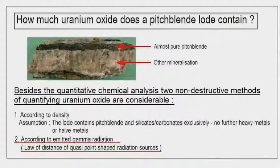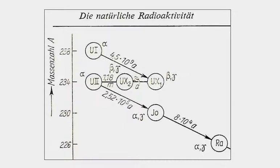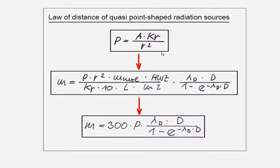The second method is based on gamma radiation and the law of distance of quasi point-shaped radiation sources. First, you have to know that uranium itself is a pure alpha-emitting source. However, a pitch blende load contains all members of the decay chain. Some of them are gamma-emitting sources: thorium, protactinium, another thorium, and radium of course. Altogether, the gamma activity of pitch blende is about 10 times higher than the activity of uranium alone.